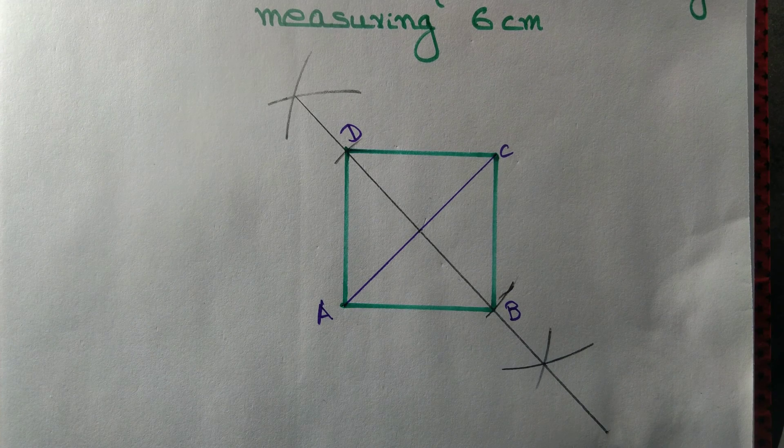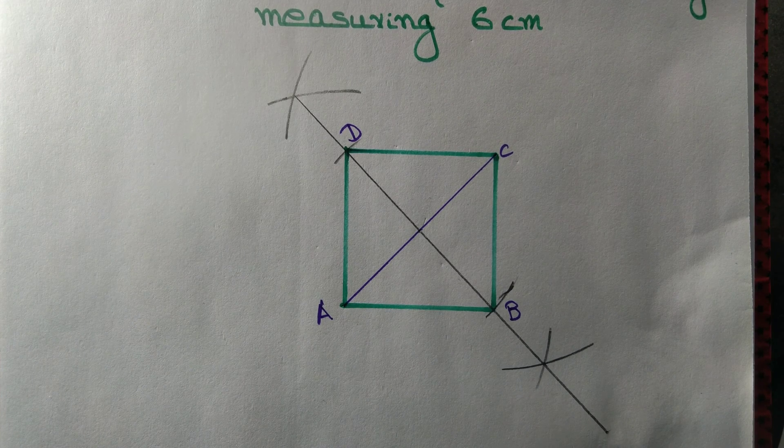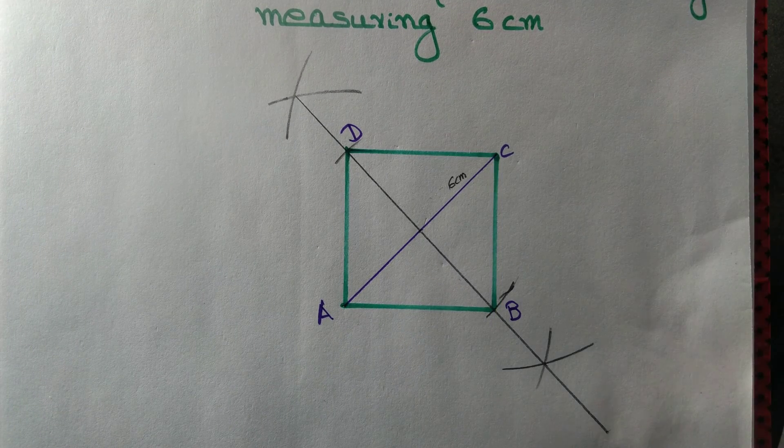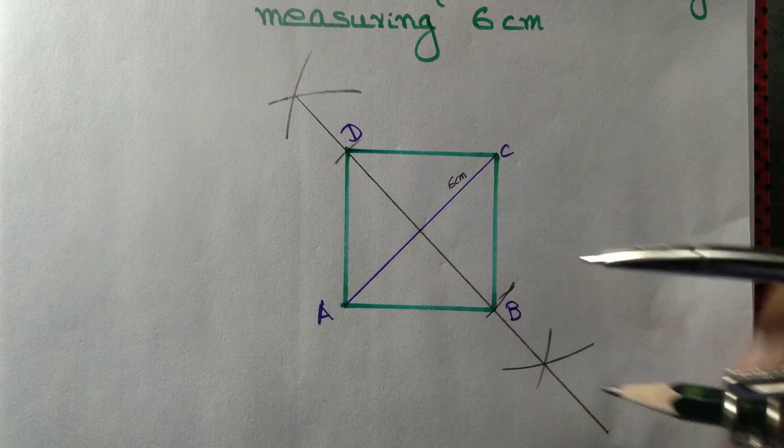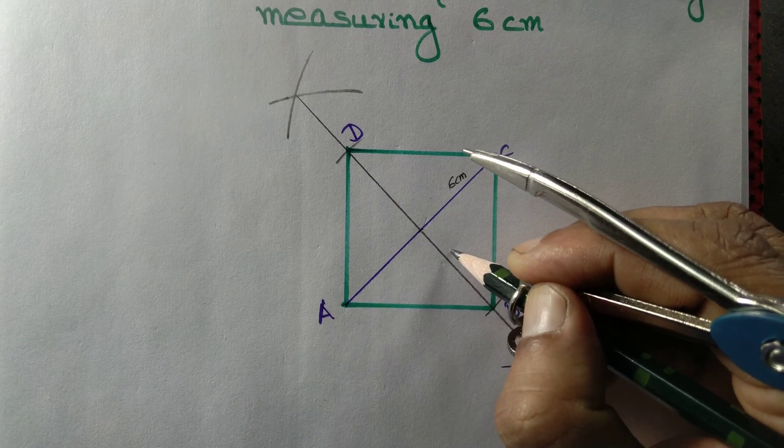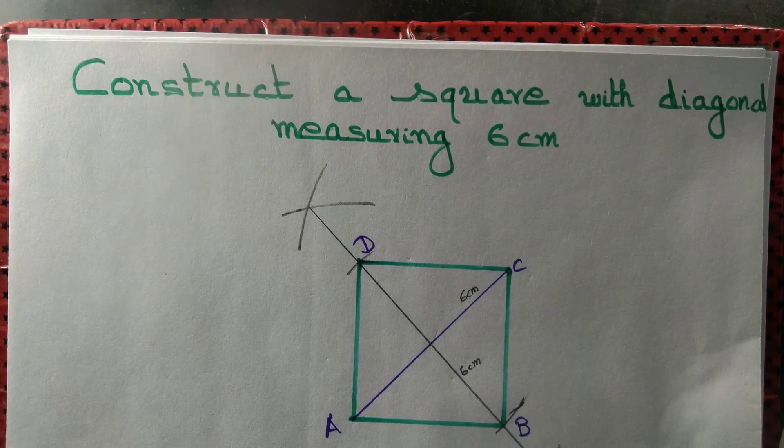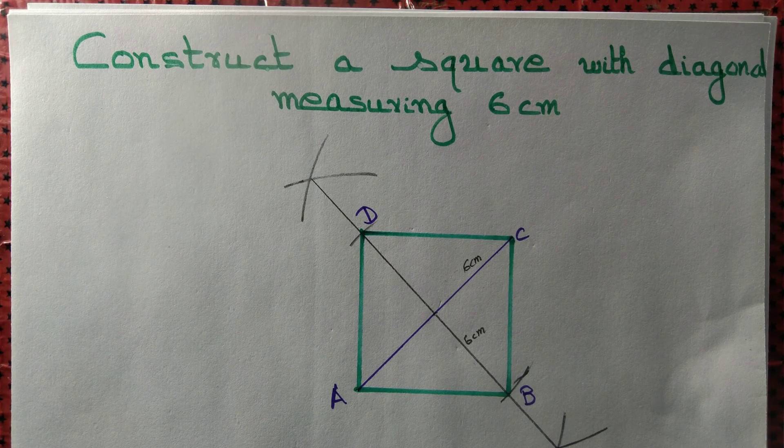So we obtain a square A, B, C, D. Diagonal AC measures 6 cm. And since we have copied half the length of the diagonal, diagonal BD will also measure 6 cm. So we obtain a square ABCD whereby diagonals measure 6 cm each.